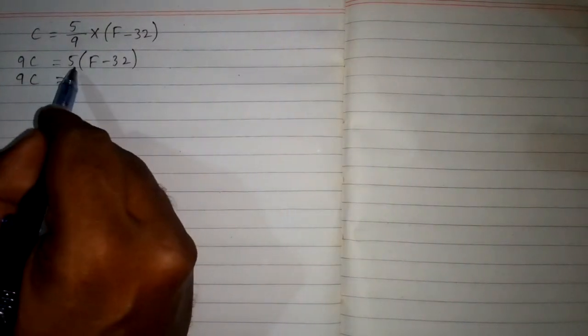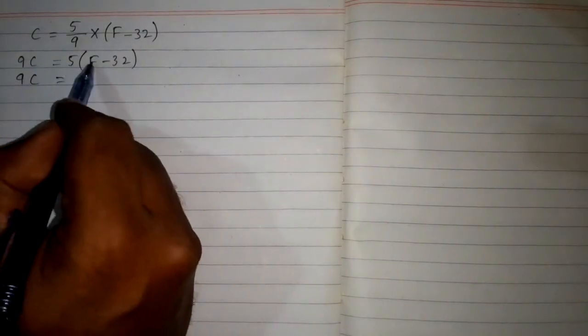So we have 9C = 5(F - 32). Now we open this bracket. We will multiply 5 by F to get 5F, and then 5 multiplied by 32 is 160.